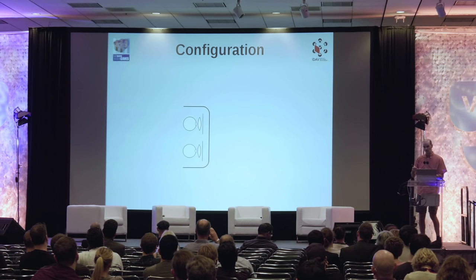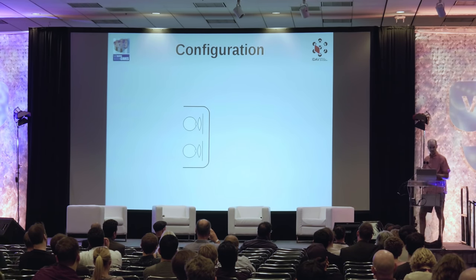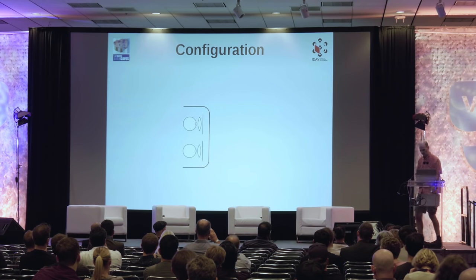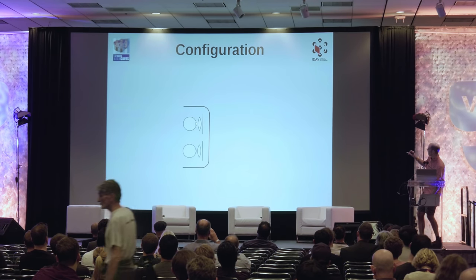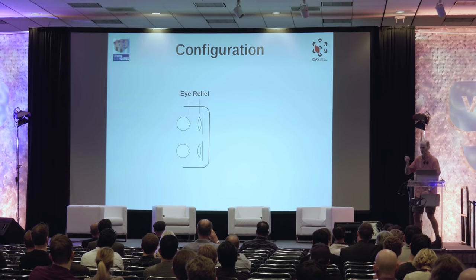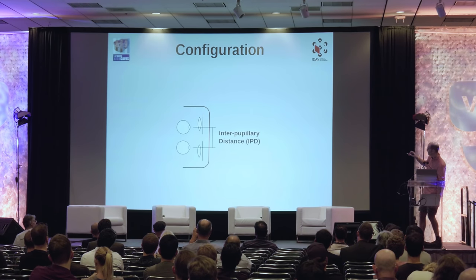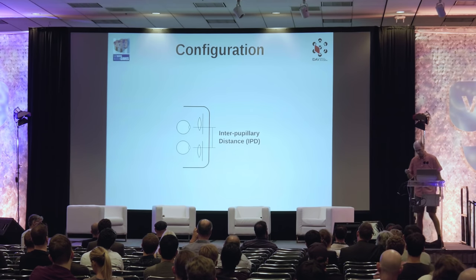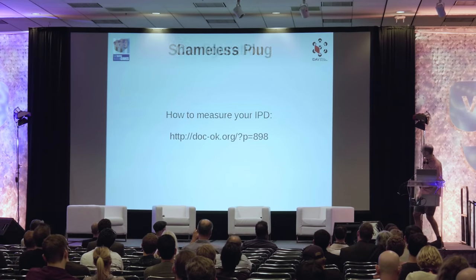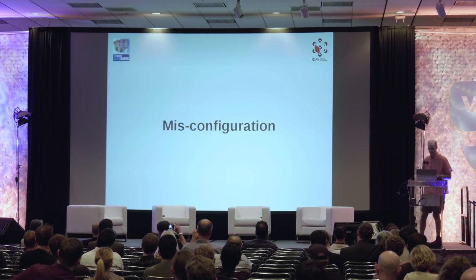Configuring a headset means telling the software where your eyes are relative to the screen when you put it on. This is simplified to two parameters: eye relief — the distance from the front of your eye to the front of the lens — and interpupillary distance, or IPD, whether your eyes are far apart or close together. If you're using a headset, put those parameters in as accurately as you can. There's a method to measure your IPD using just a ruler and a mirror.